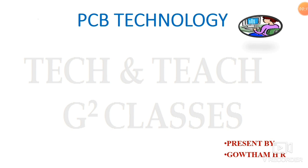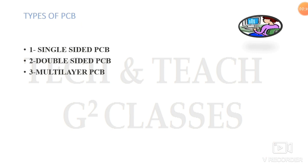In types of PCB we have three types: single-sided PCB, double-sided PCB, and multilayer PCB. In a single layer PCB we have only one conductive material. In double-sided we have two layers of conductive material. In multilayer we have more than two layers of conductive material. We will look at how they resemble each other in the next slide.